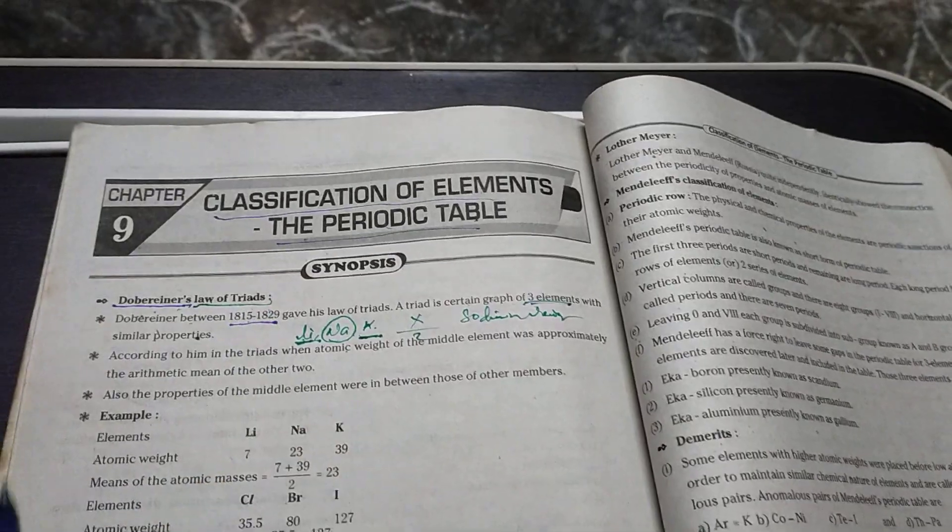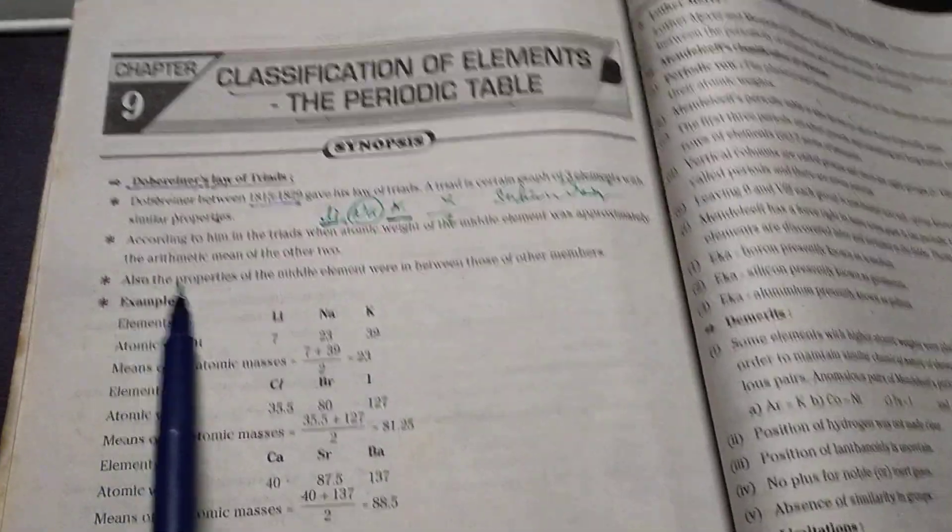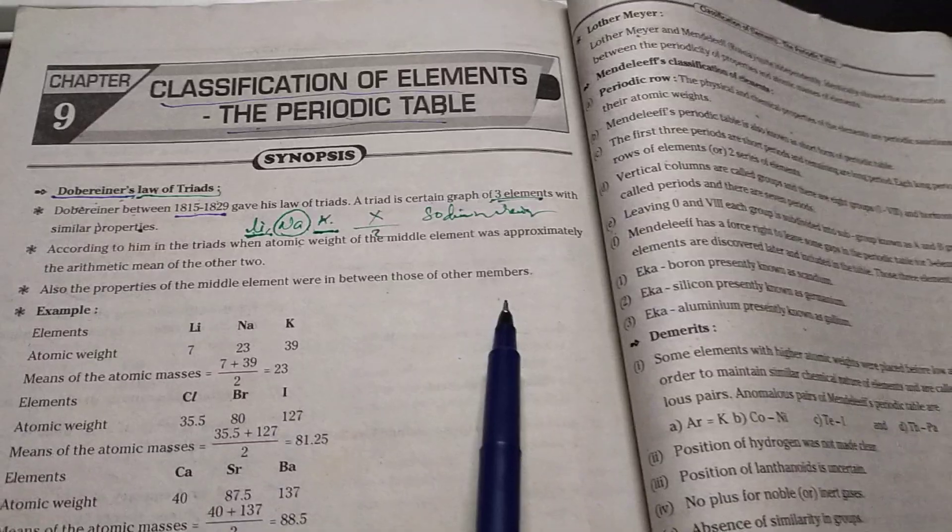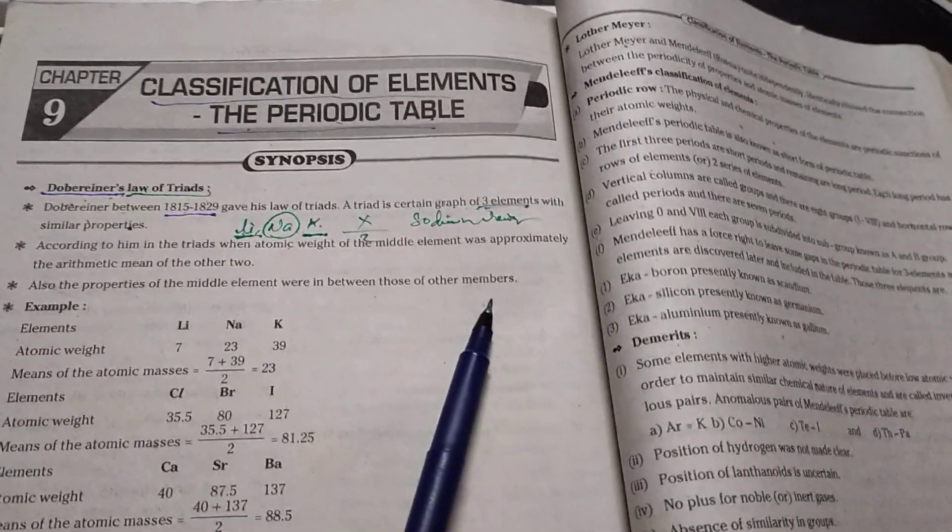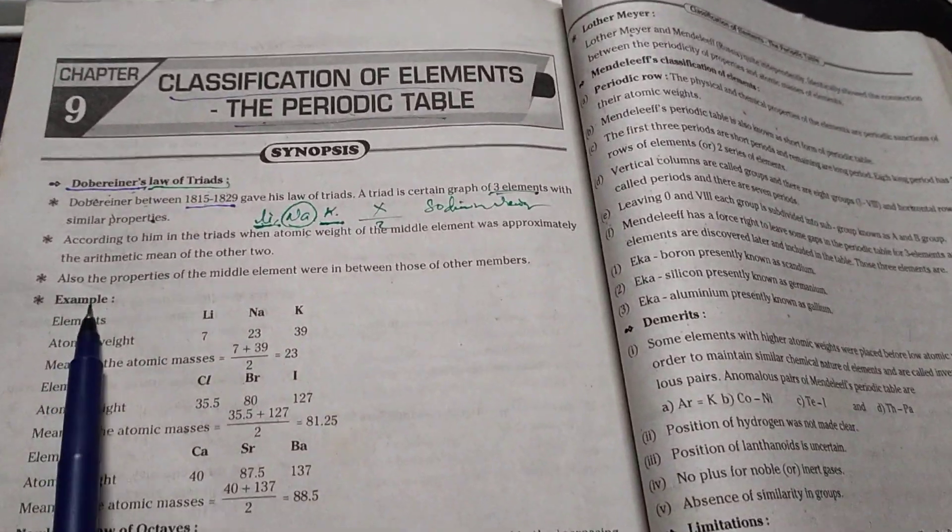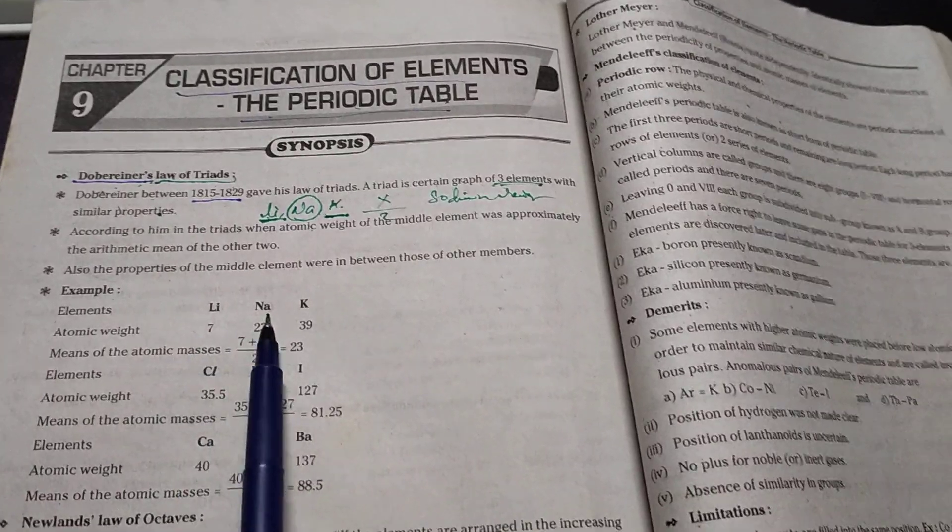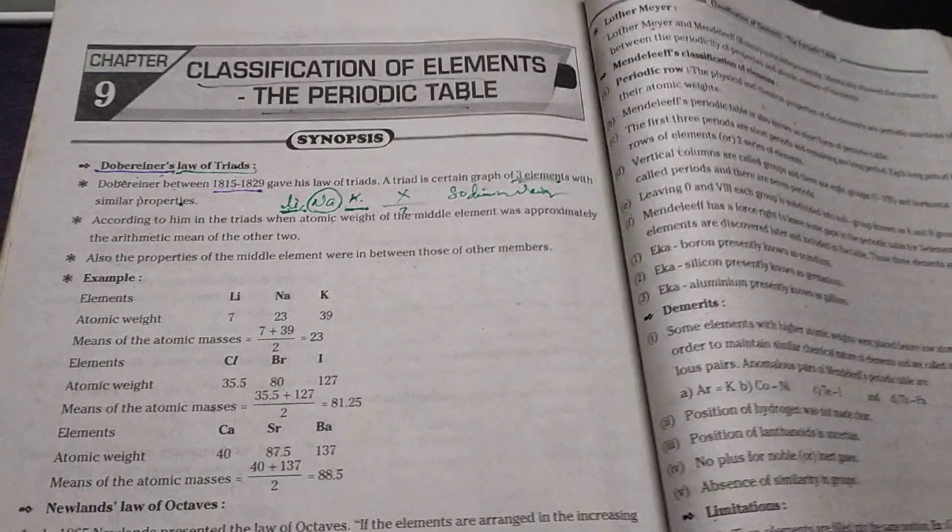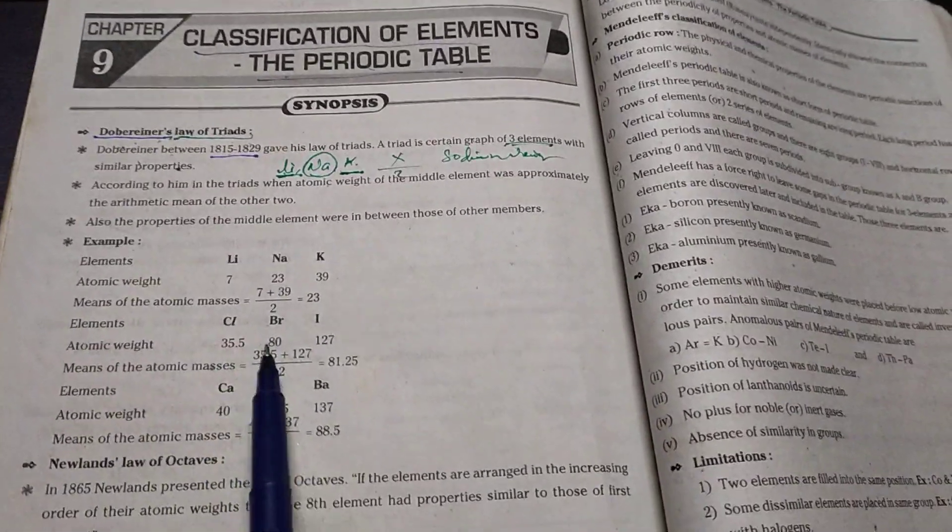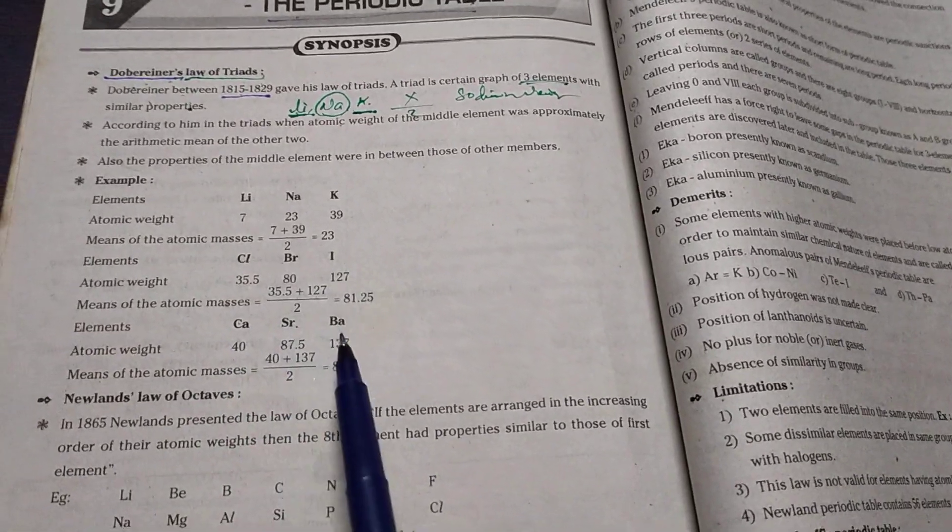Also, the properties of the middle element are in between those of other members. Examples: lithium, sodium, potassium; chlorine, bromine, iodine; calcium, strontium, barium.